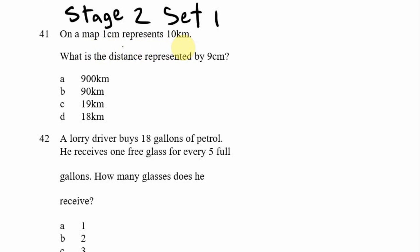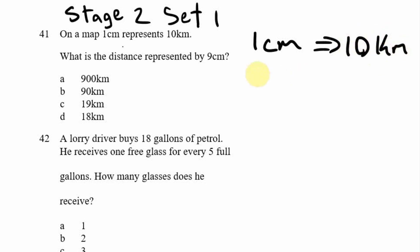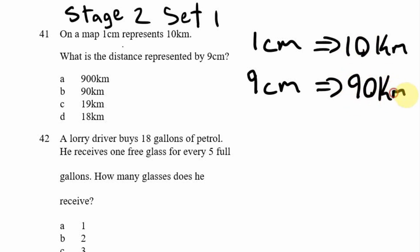Looking at question 41: on a map, one centimeter represents 10 kilometers. What is the distance represented by nine centimeters? We can use proportion or common reasoning. If one centimeter on the map represents 10 kilometers, then for nine centimeters on the map the actual measurement should be nine times as many kilometers — nine times 10 is 90 kilometers. So one centimeter equals 10 kilometers, and nine centimeters equals 90 kilometers, which means option B is your answer.